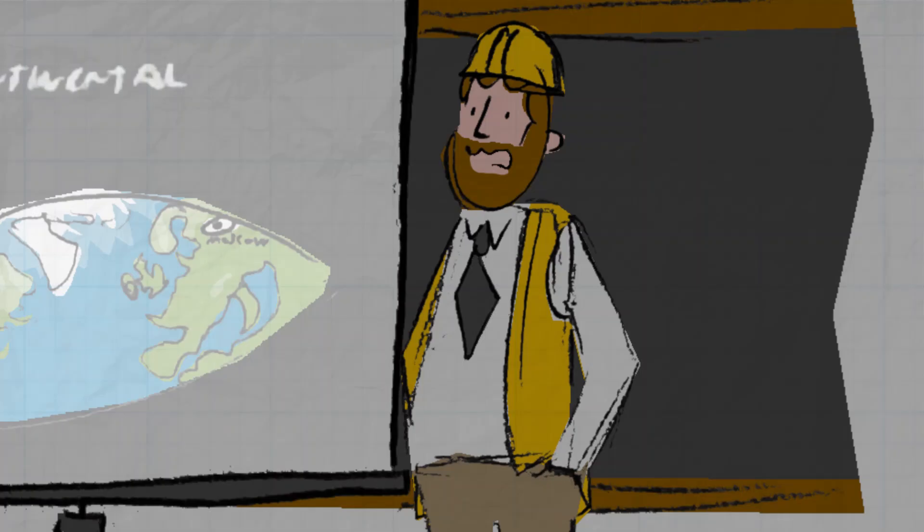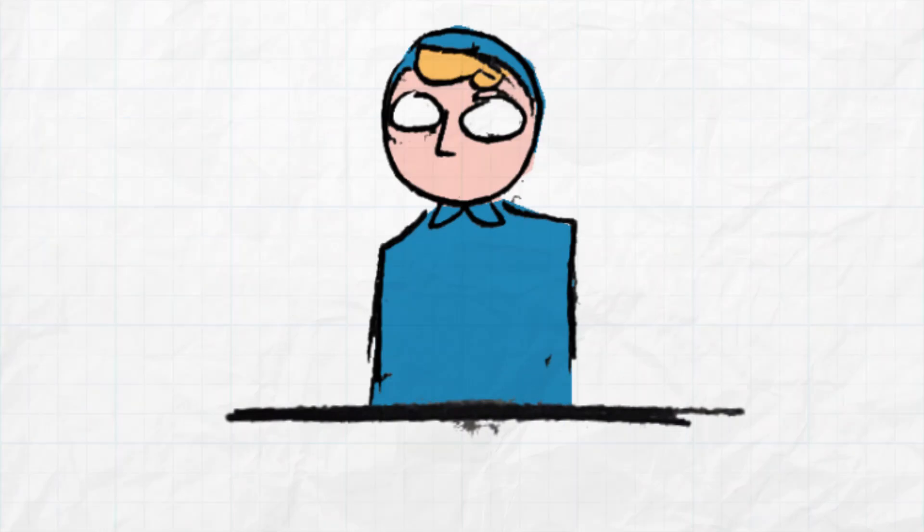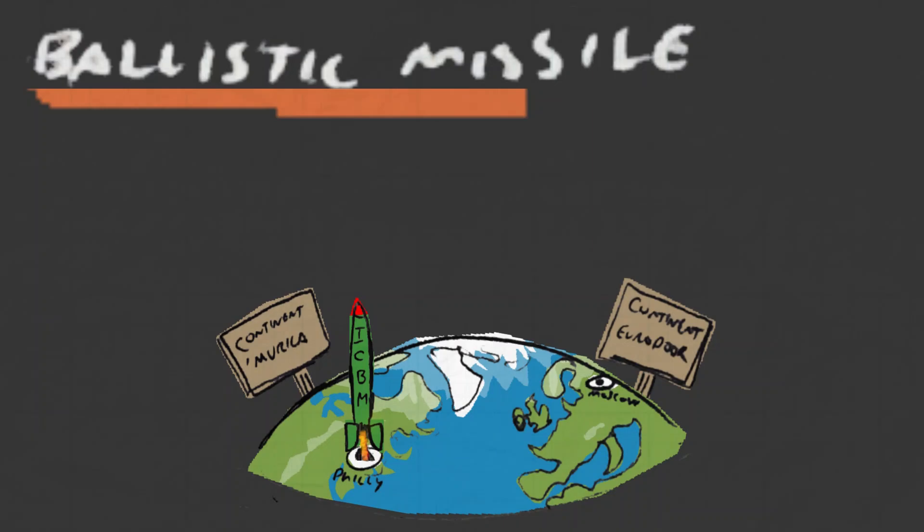It's intercontinental because it goes between continents, and it's a ballistic missile because it goes up and then it comes down. Right?